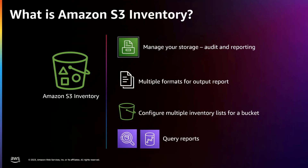S3 inventory provides multiple formats and frequencies for its output delivery — CSV, Apache ORC, or Apache Parquet output files that list your objects and their corresponding metadata on a daily or weekly basis for an S3 bucket or a shared prefix. You can configure multiple inventory lists for a bucket, choose what object metadata to include, whether to list all object versions or only current versions, where to store the output, and whether to encrypt the inventory list file. You can query Amazon S3 inventory using standard SQL with Amazon Athena, Amazon Redshift Spectrum, and other tools such as Presto, Apache Hive, and Apache Spark.